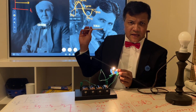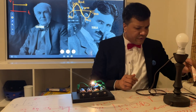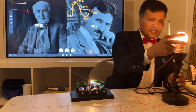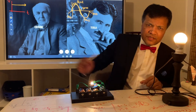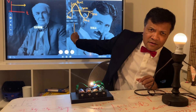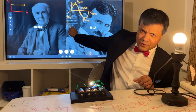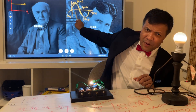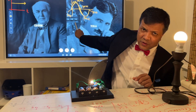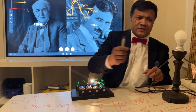On the other hand, AC current is not constant. AC current illustrates sinusoidal behavior. What does that mean? AC current starts at zero, then goes up to the peak, then goes down to zero, then goes back up to the peak again, and back to zero.